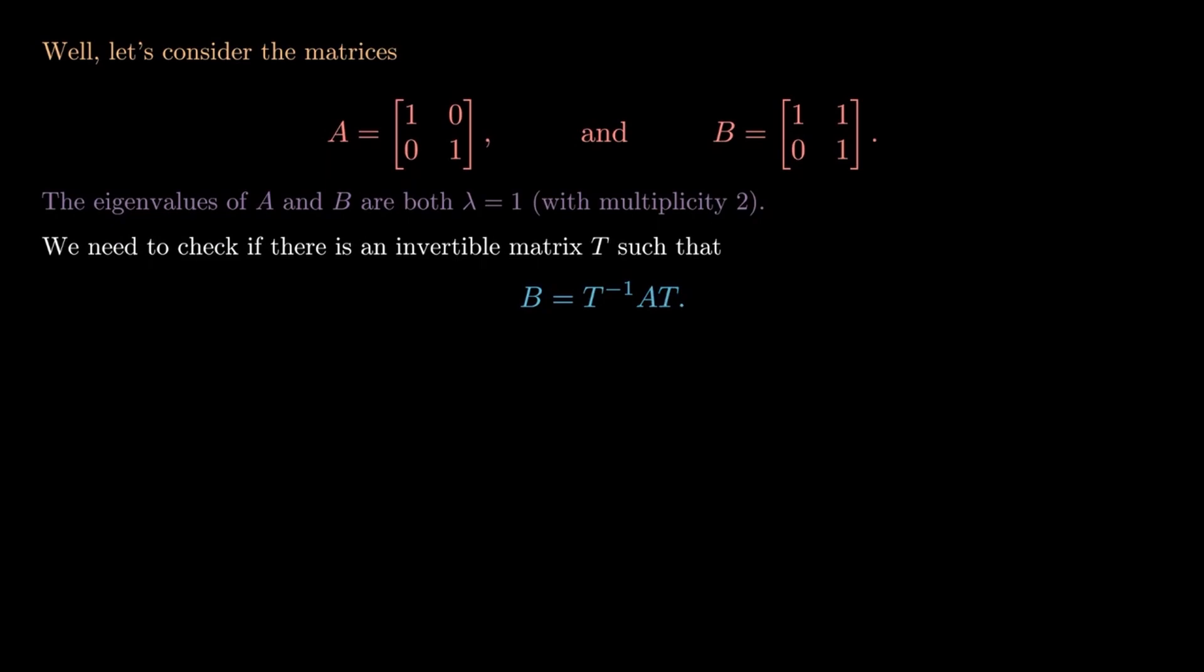In other words, we need to check if we can change the grid such that A can be written as B or B can be written as A. Now since A is the identity matrix, we see that T inverse A T is just T inverse T, because A T is just going to be T again.